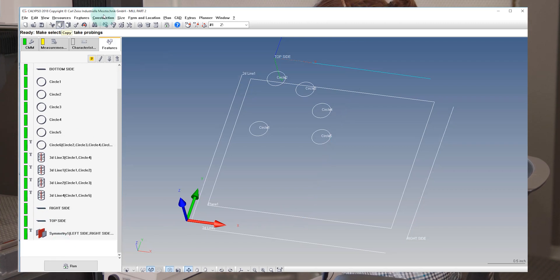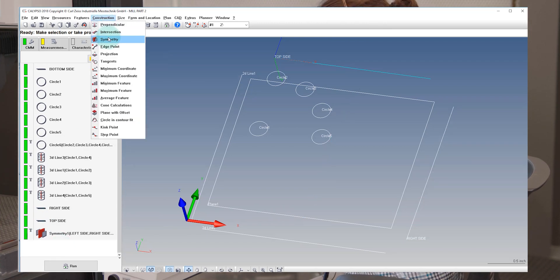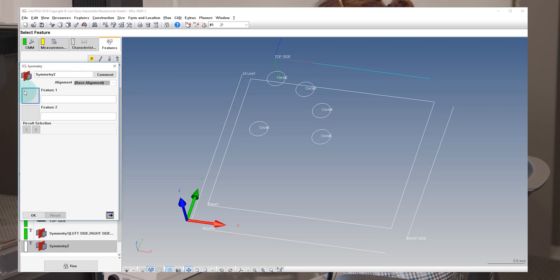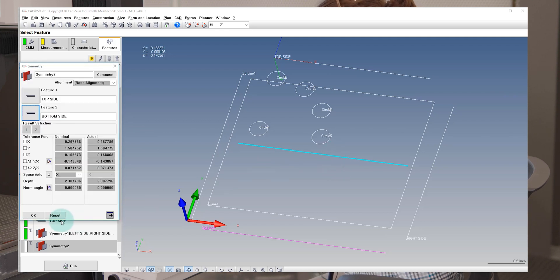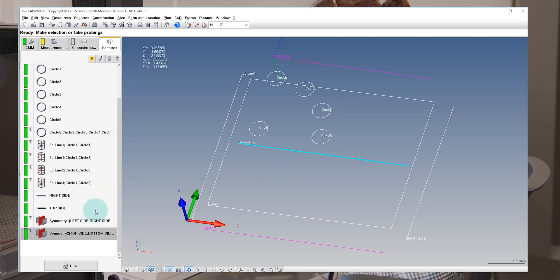And then we'll do the same thing again. Symmetry, double click. This time we'll use the top of the part and the bottom of the part. And as always, we can go in our screen and our workspace and see what's being selected, so we select the correct things, and I'll hit OK on this dialog.